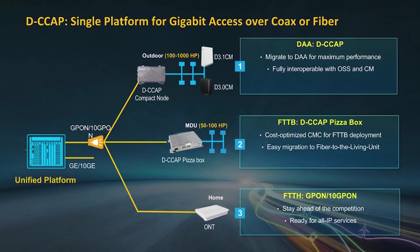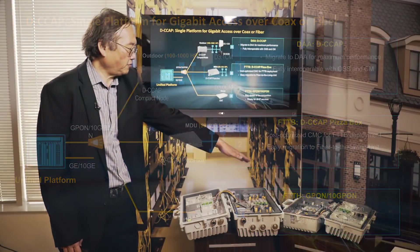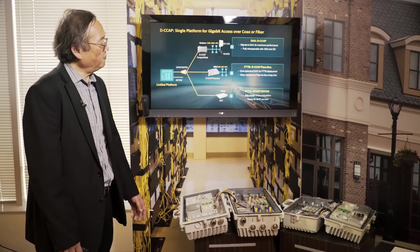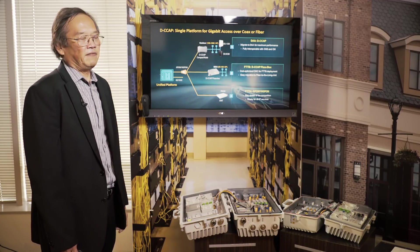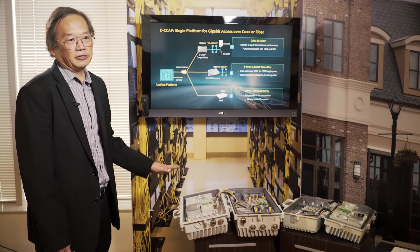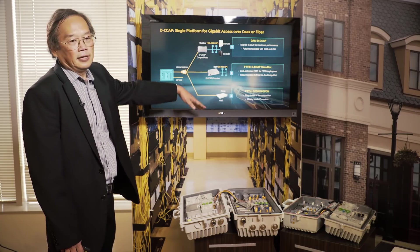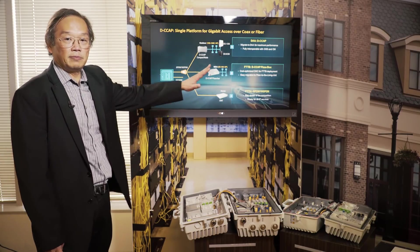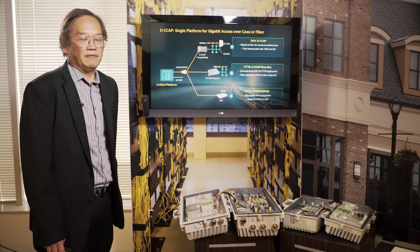The second use case is for MDUs — multi-dwelling units. These are typically apartments, student housing, or dormitories. This smaller unit is designed to support anywhere from 50 to 100 homes passed, which is the number of living units you typically see in apartment buildings. These are two different form factors with different power requirements. For the HFC nodes, they use coax line power — 60 volts or 90 volts. For the MDUs, they're typically installed indoors with 110 volts as the power source.